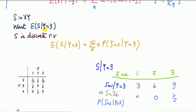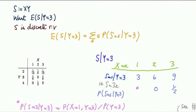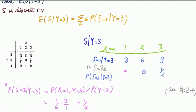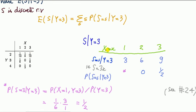Since S is also a discrete random variable, we need its conditional probability given Y equals three, which we can get from the joint probability mass function. Given that X can be one, two, or three, S takes values three, six, or nine respectively, since S equals three times the X value when Y is three.